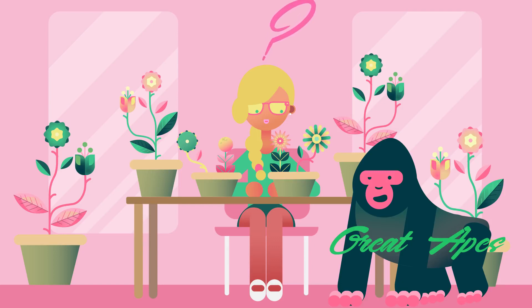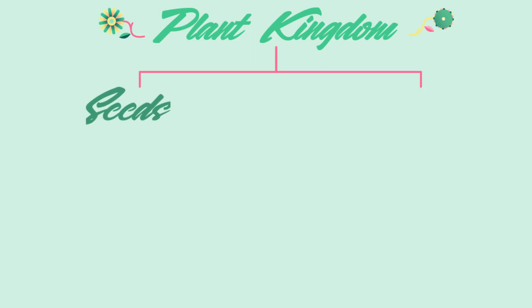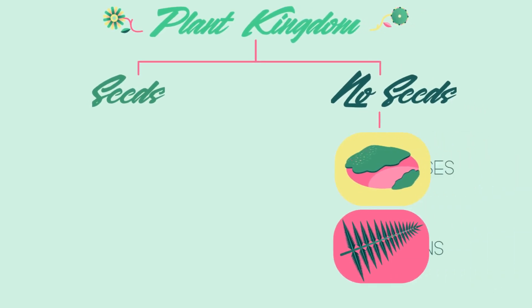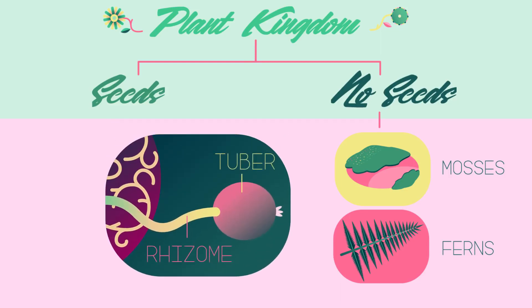So how are plants classified? The plant kingdom can be split into plants with seeds and plants without seeds. Not every plant grows from a seed — like ferns and mosses, for example. They grow from spores instead. Other plants use asexual reproduction and grow new plants from rhizomes or tubers.